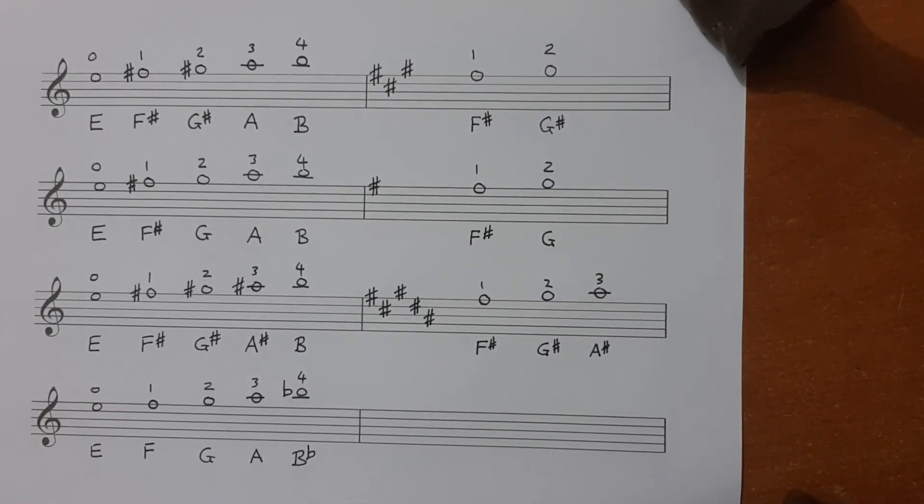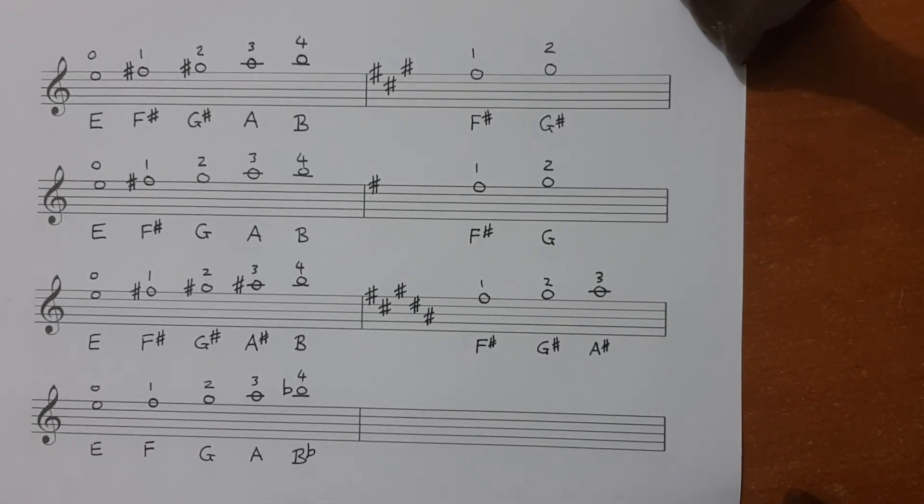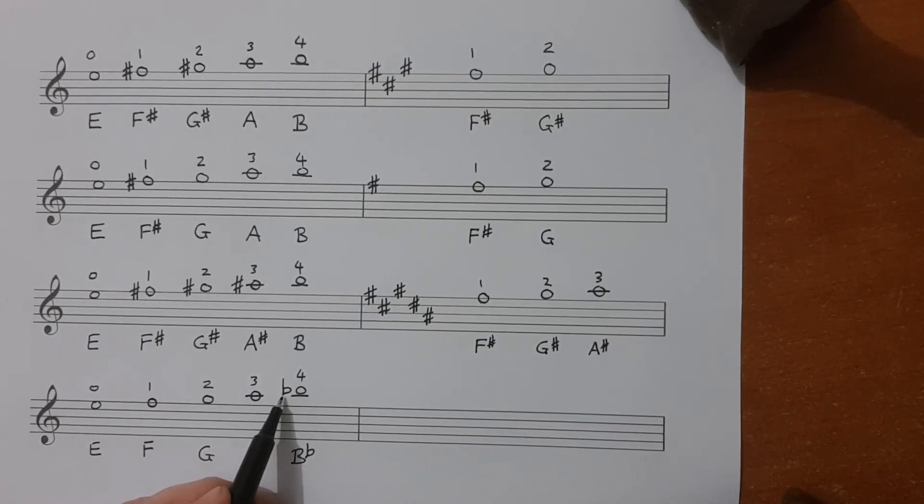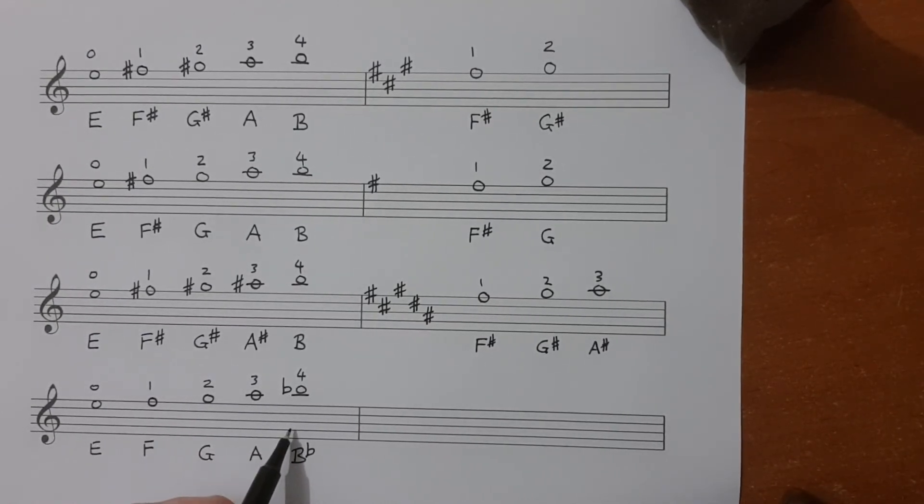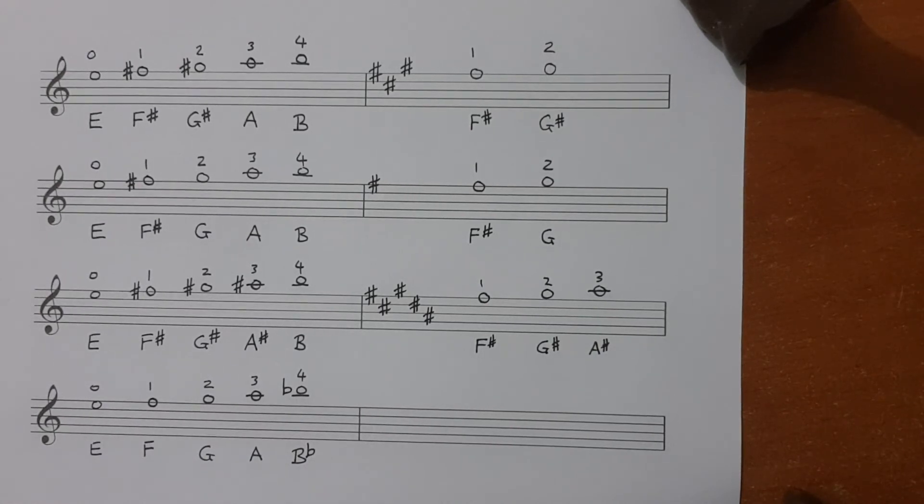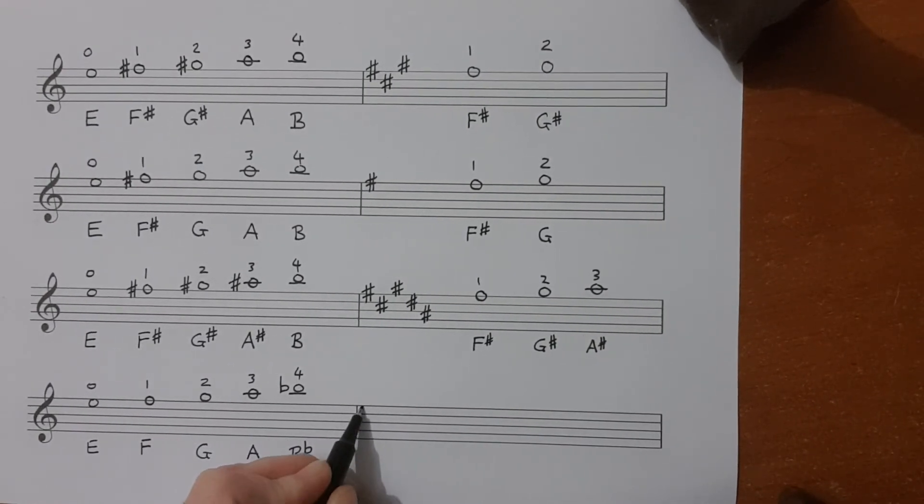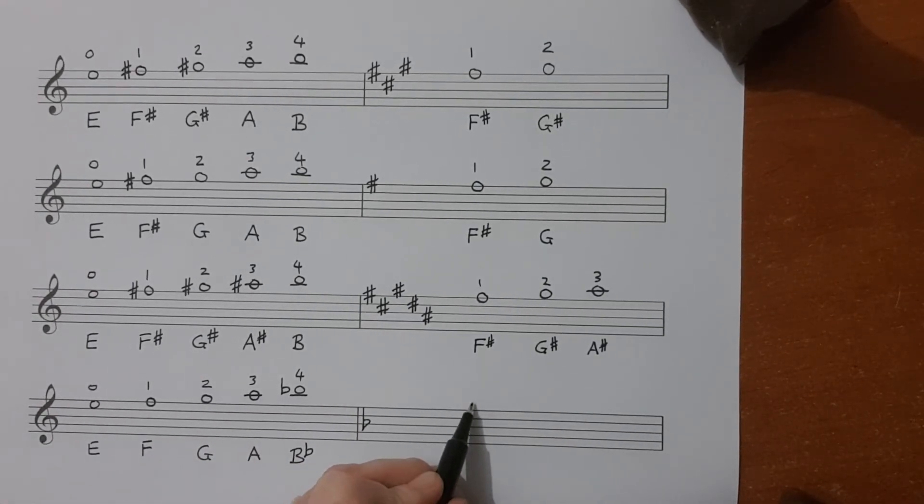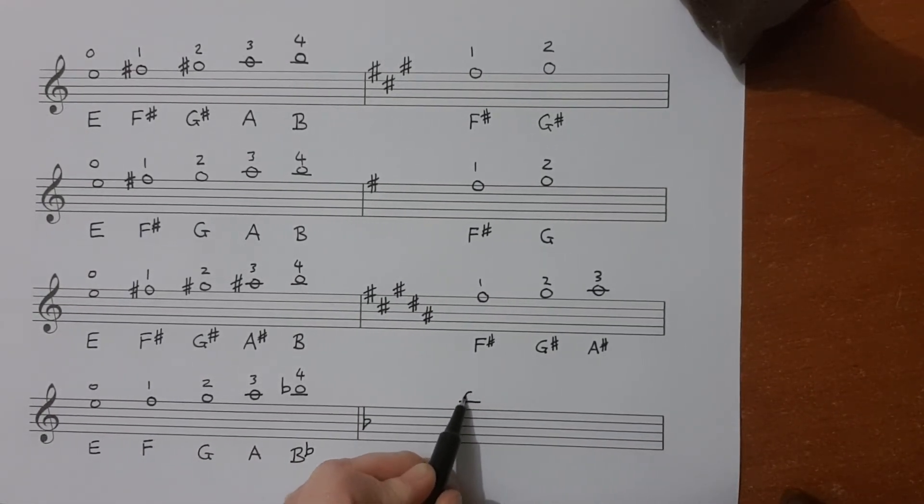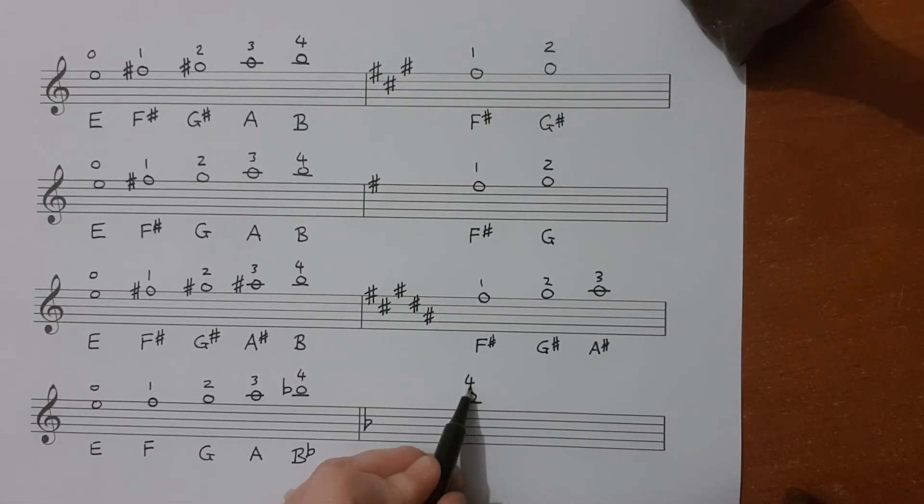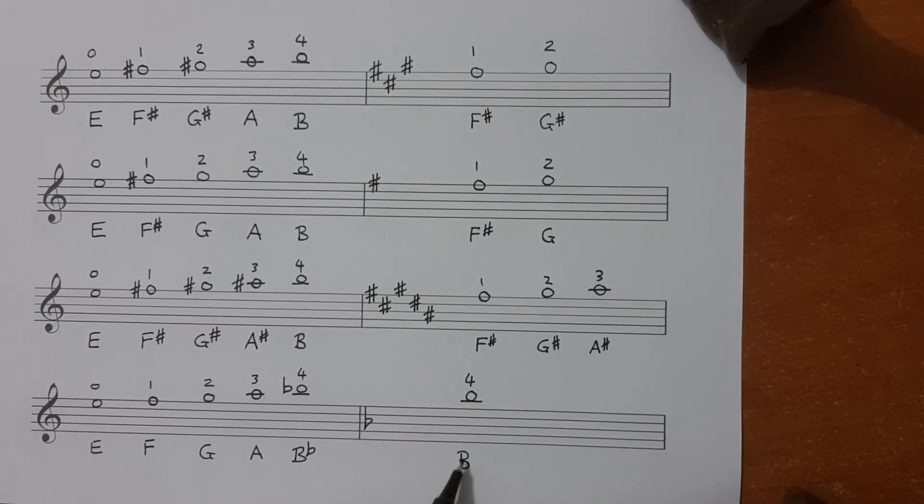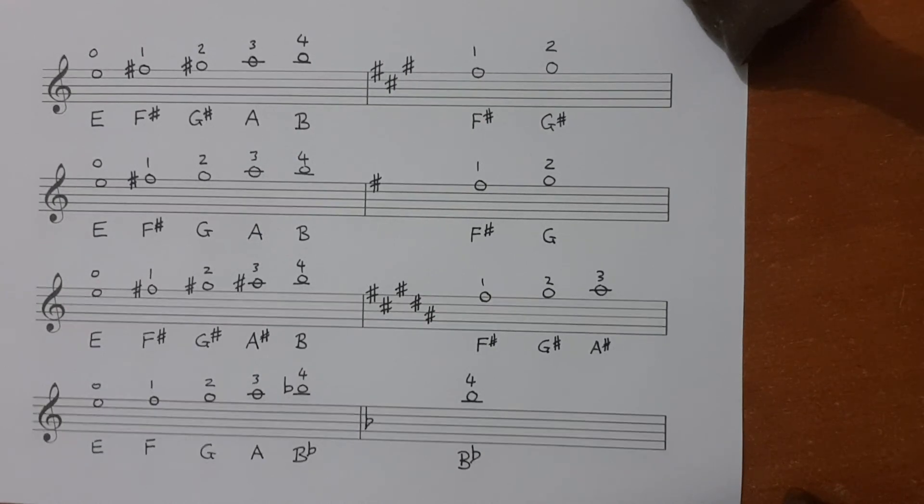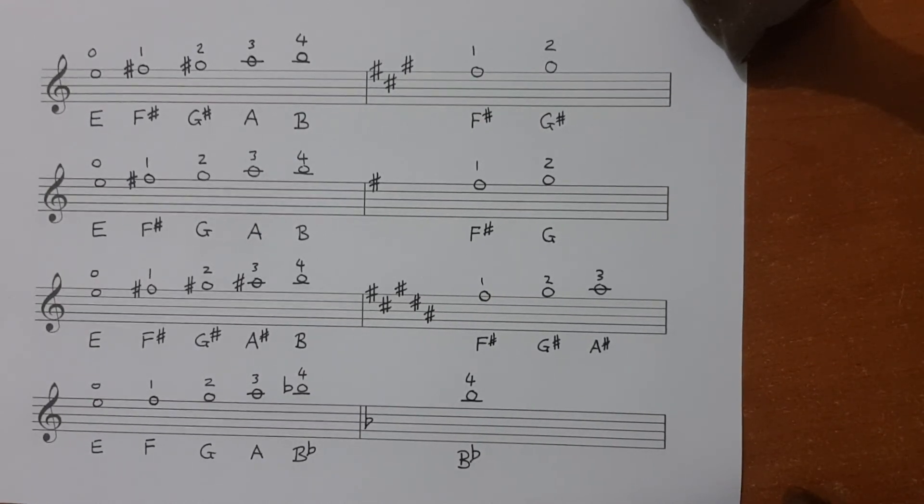So it's a little unusual to have this B flat. We're going to write it over there in the key signature which would mean that this note over here would be played with the fourth finger as a B flat and that's the fourth finger frame.